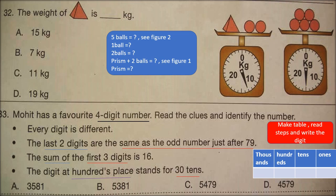Question number 32: The weight of the prism is dash kg. See the figure — the weight of the prism and two balls is given, and the weight of five balls is given. Calculate the weight of the prism. See the solution at the end of the video.